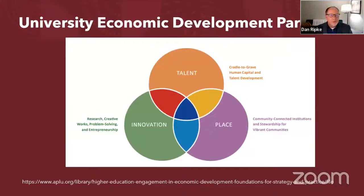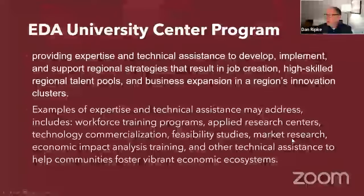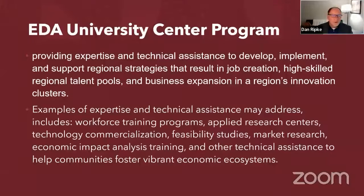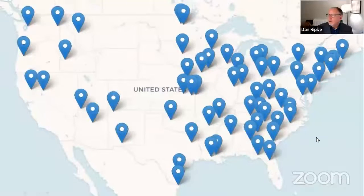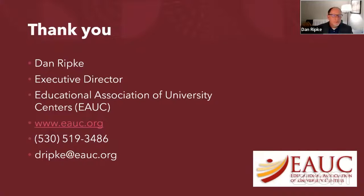Traditionally when we go into a community and try to align a university or help the university identify ways to engage on a local basis, we try to help them find ways in which their existing programs fall within these seven areas. The university center program is basically a technical assistance program funded by the federal government and Department of Commerce, on a five-year competitive cycle. For those in the United States, it is something you can compete for on a five-year basis with renewing grants, and it provides an excellent opportunity for your university to get involved. If you are in a rural area, I highly encourage you to partner with some of these programs. Thank you very much.